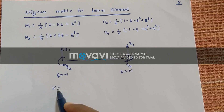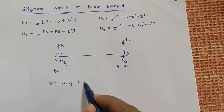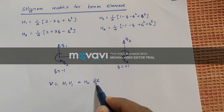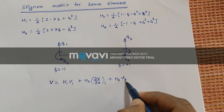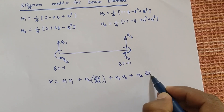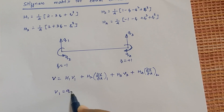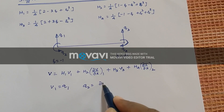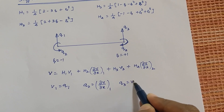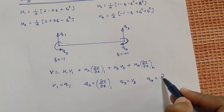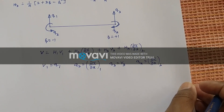We know this: the displacement function V can be written as H1·V1 plus H2 into dV/dX at node 1 (when zeta is minus 1), plus H3·V3 plus H4 into dV/dX at node 2. Here, V1 is taken as Q1, Q2 is dV/dX at node 1, Q3 equals V3, and Q4 equals dV/dX at node 2. Node 1 corresponds to zeta equals minus 1 and node 2 to zeta equals plus 1.